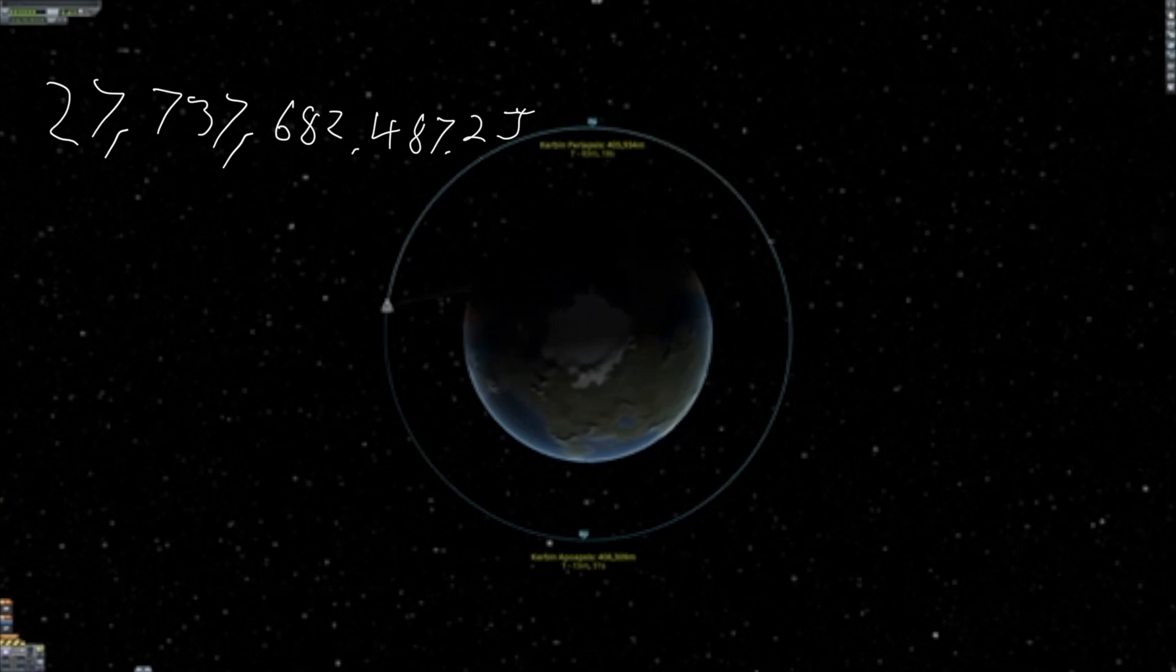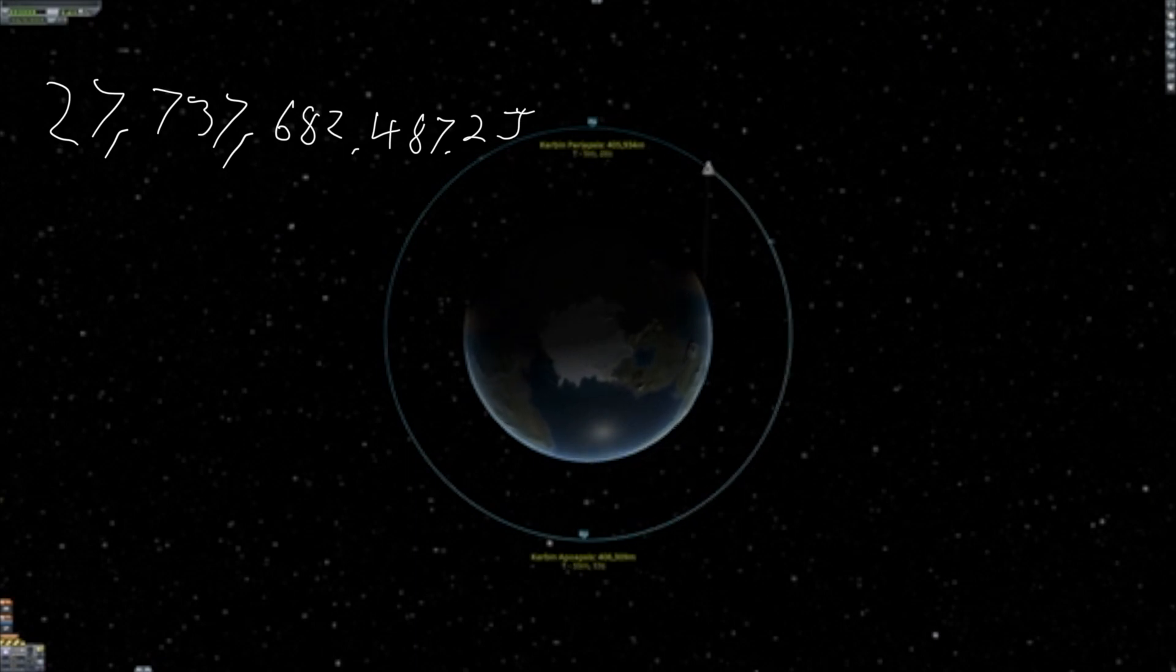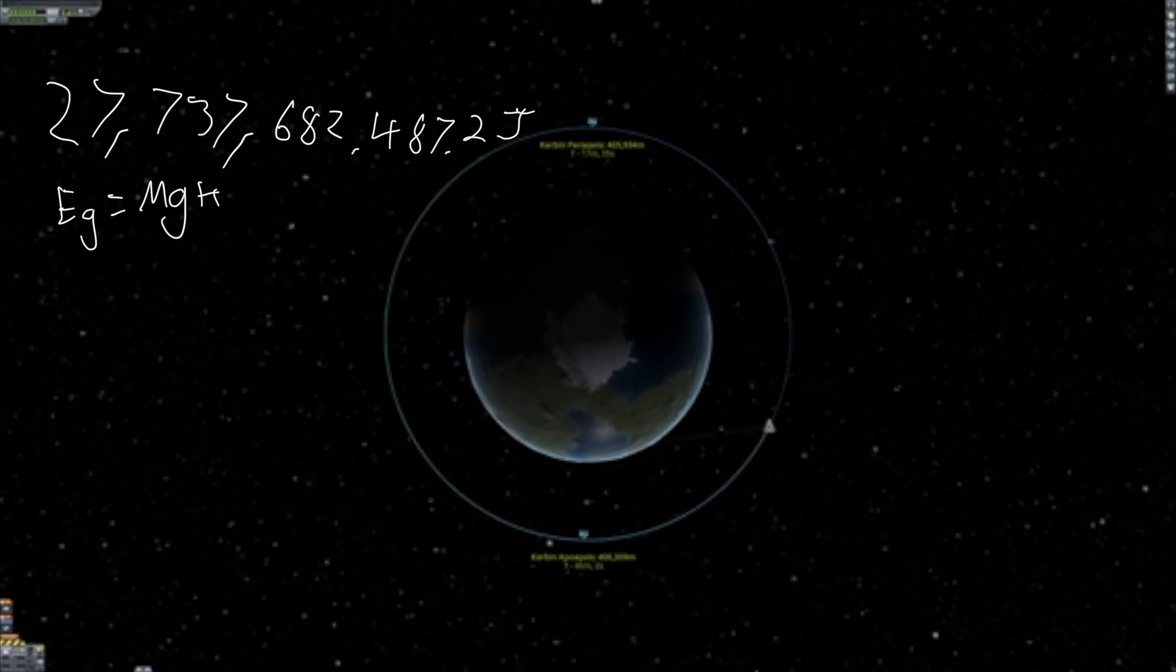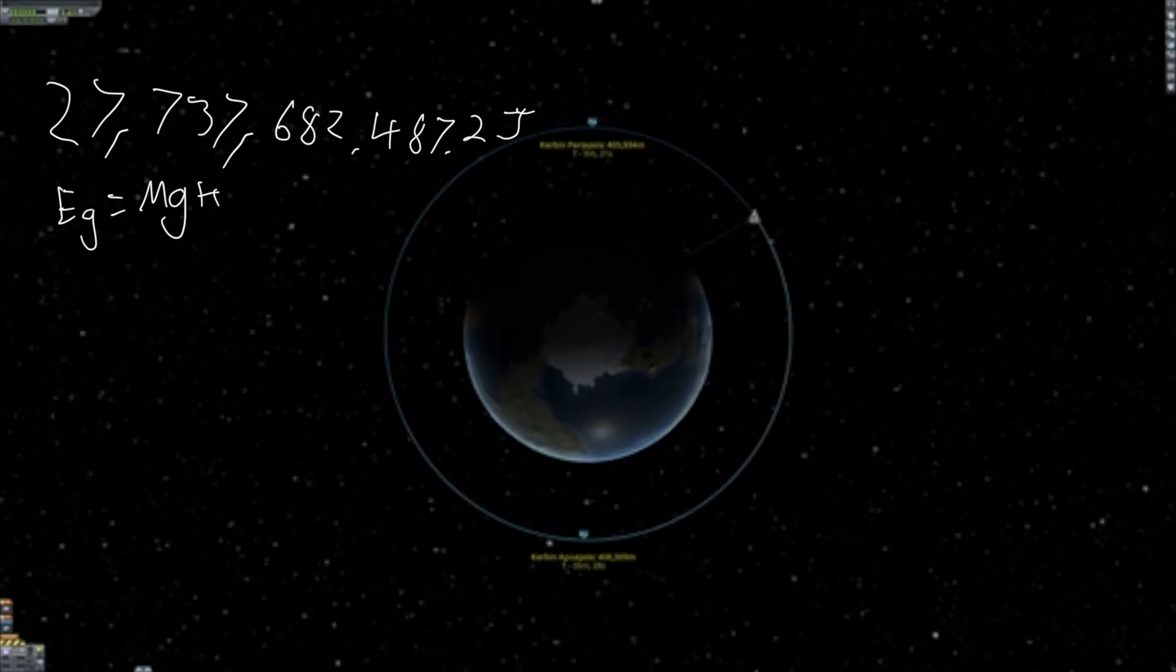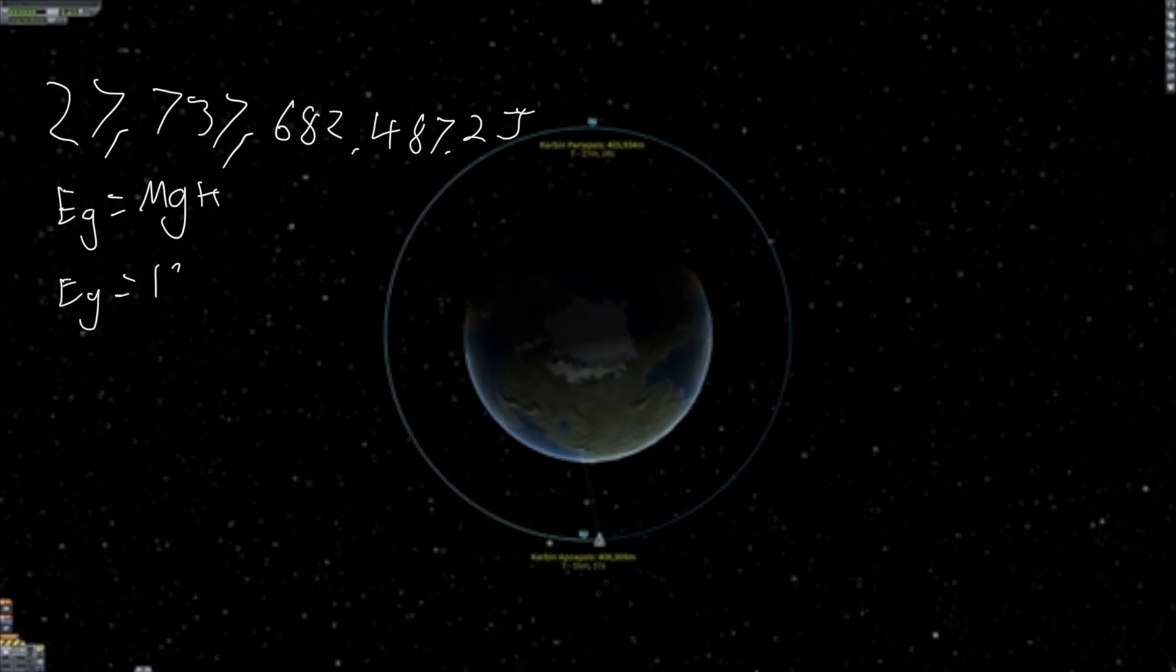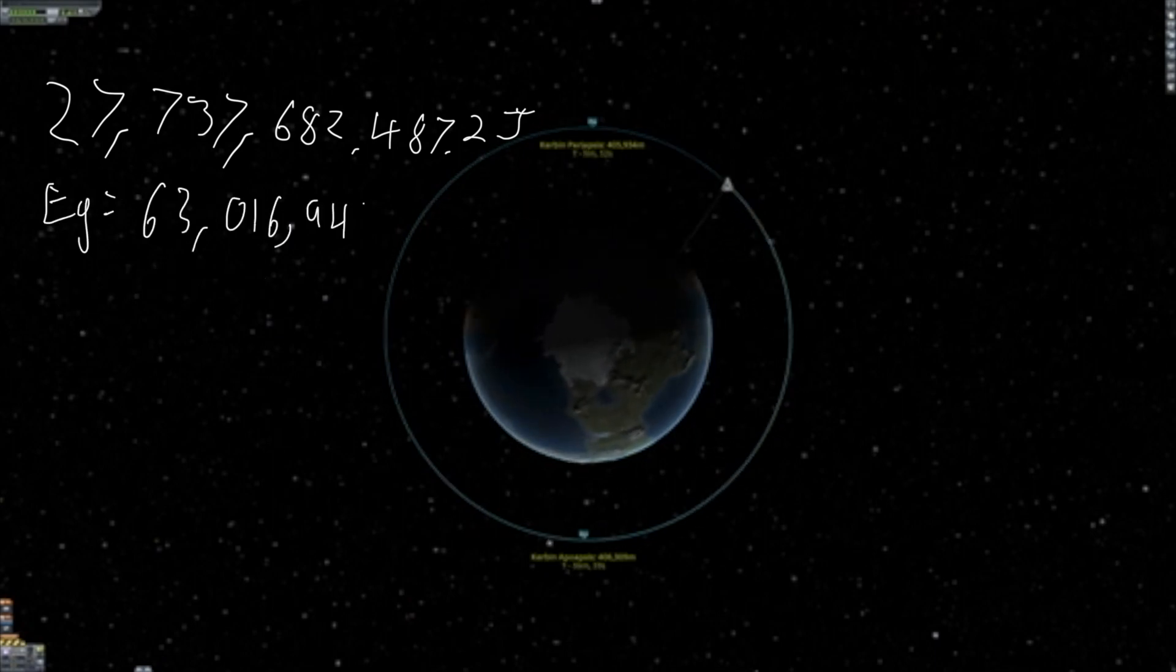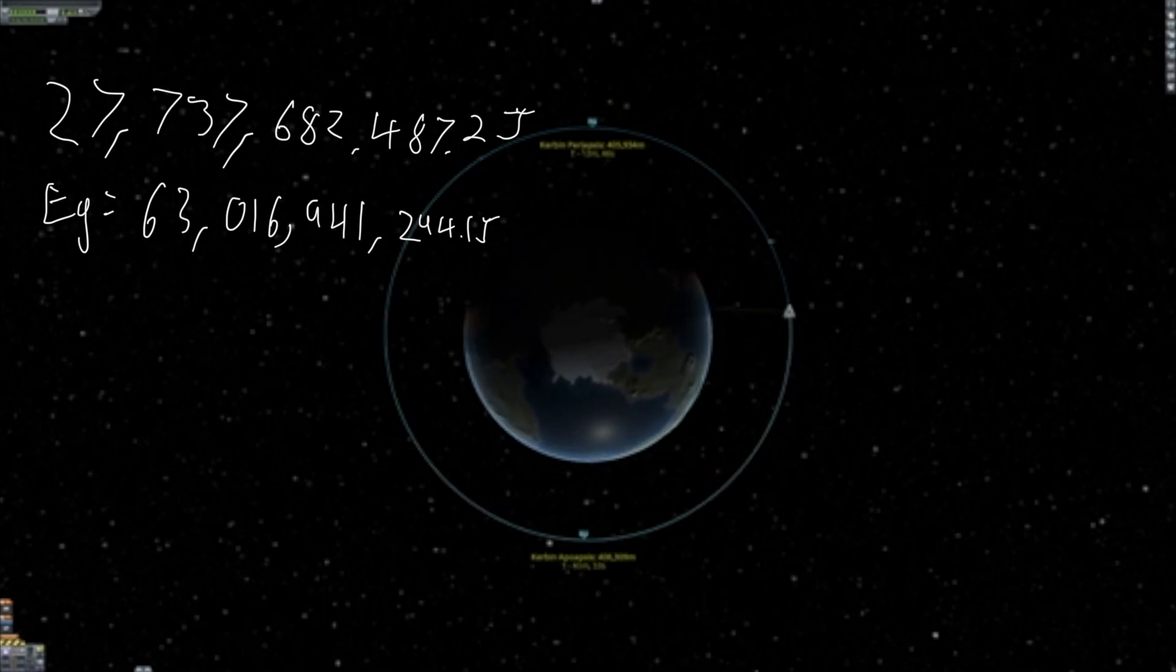Now we need potential energy. It may seem unintuitive, but there still is gravity up here. If I had no velocity, I would fall back down. To calculate the potential energy, we can use this equation: energy potential equals mgh. I know that gravity changes slightly when at high altitudes, but for simplicity, and to get the point across, we'll use this. Our gravity is 9.81, our height is our altitude, apoapsis 406,309 meters, and mass is the same as before. We can then enter these into our equation and find out energy potential is 63,016,941,294.9 joules.